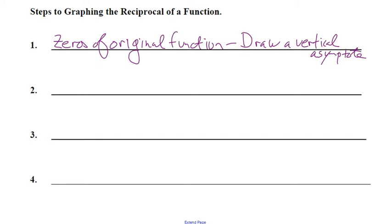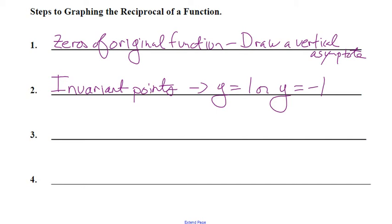Step two: invariant points — where y = 1 and where y = negative 1. Just trace along the y = 1 line; anywhere you hit the curve, put down a point. Those will be the invariant points. Same with y = negative 1. Step three: find the reciprocals of any max or min.